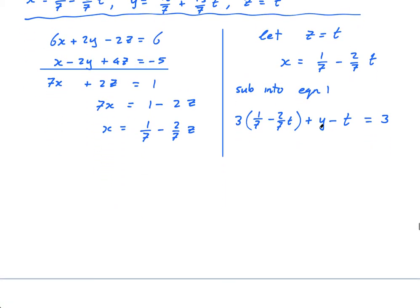And now I just need to find y in terms of T. So this is three sevenths minus six sevenths T plus y minus T equals 3. And then finally, let's put y over here. Y is equal to three minus three sevenths. So that's 21 sevenths minus three sevenths is 18 sevenths. And then I have, on the left hand side, I have negative six sevenths T plus seven sevenths T, which is 13 sevenths T. And then add it to both sides, giving me plus 13 sevenths T.